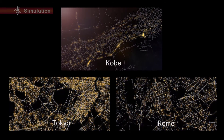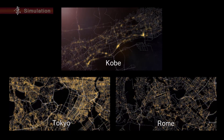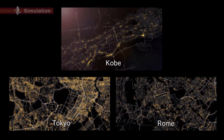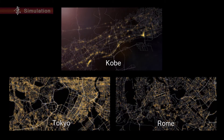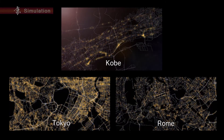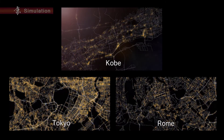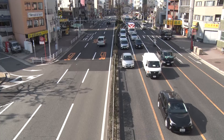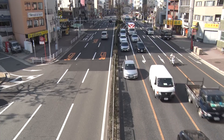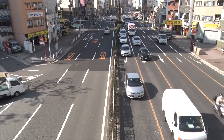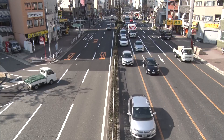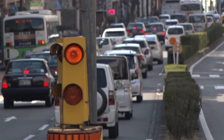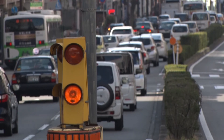Not only Kobe, but Tokyo and Rome — this simulation can be run simultaneously for cities around the world. As this research advances, it will greatly help to improve automobile traffic.